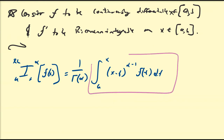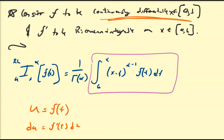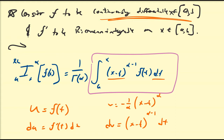Since this is an integral like any other, we're going to use integration by parts to manipulate this expression. We let u equal f of t, so du equals f prime of t dt — this is where the continuously differentiable property comes in. Then dv equals x minus t to the alpha minus 1 dt, and integrating gives v equal to negative 1 over alpha times x minus t to the power of alpha, which you can verify using the power rule and chain rule.